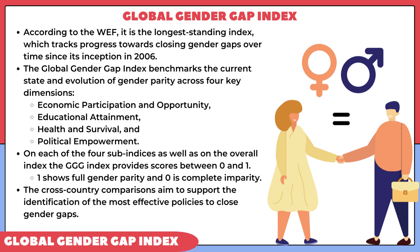In every index there is an evaluation. In the overall gender gap index, score is provided between zero and one. If someone has a zero score, there is complete imparity — no parity at all. If a score of one comes, it shows that the particular country has full gender parity. The cross-country comparison basically helps to support the continuation of the most effective policies for reducing gender gap.